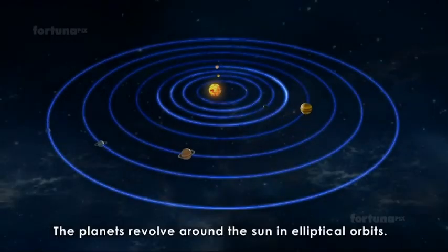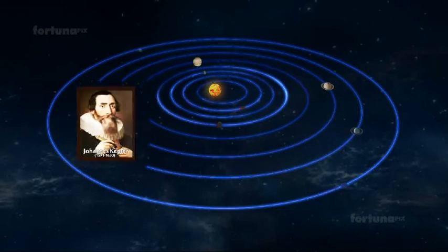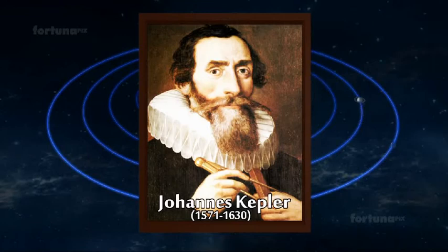The planets revolve around the sun in elliptical orbits. This fact was discovered by the German astronomer Johannes Kepler who proposed the three laws of planetary motion.